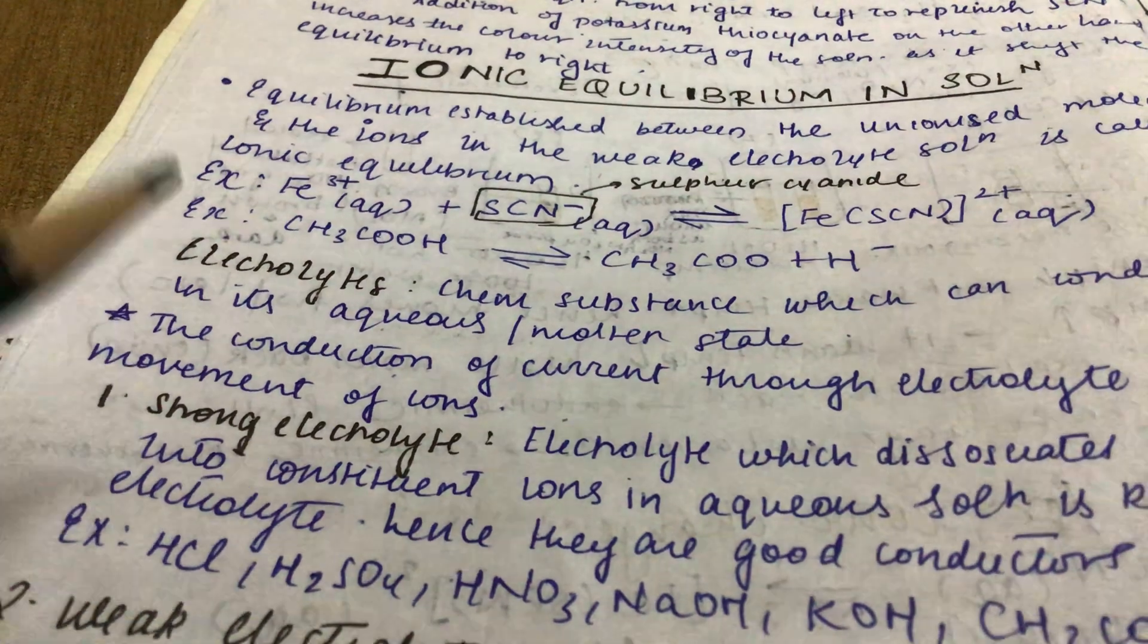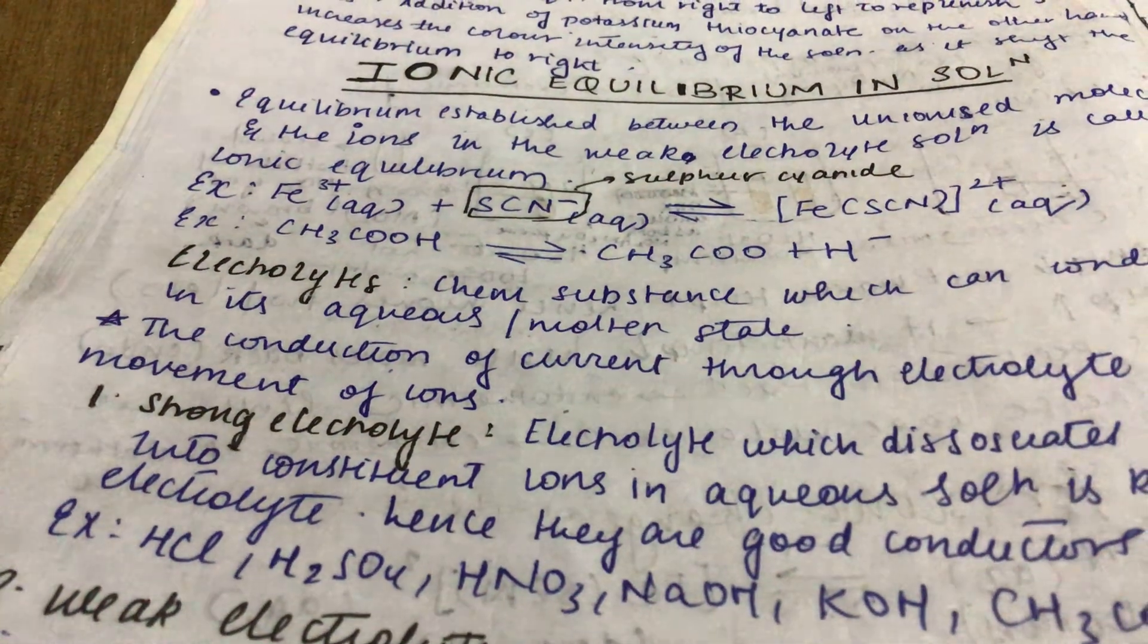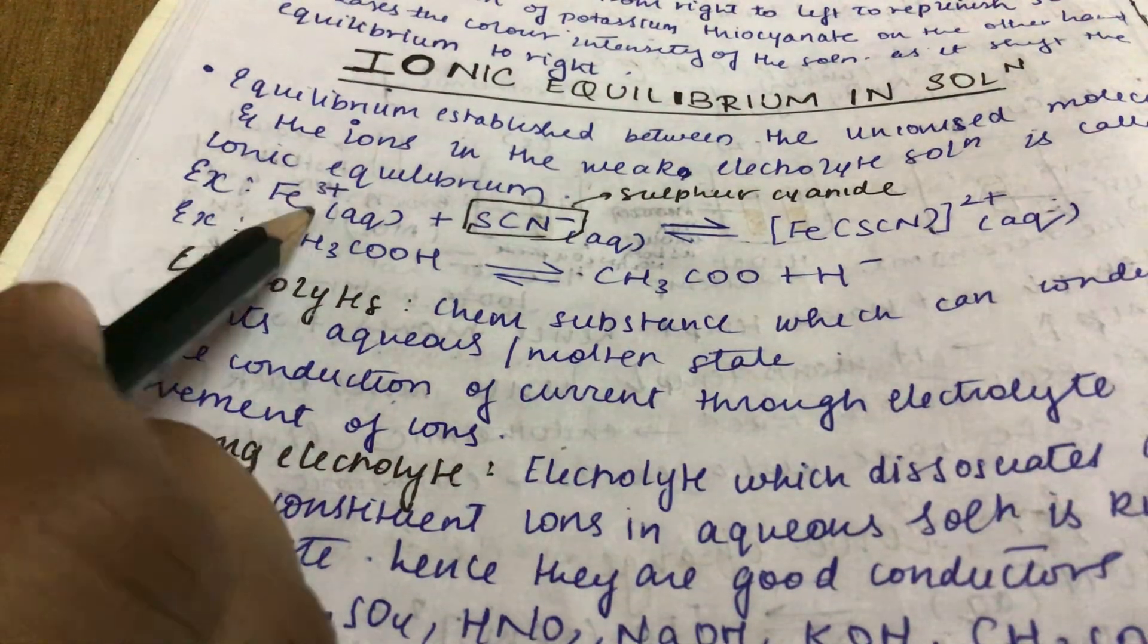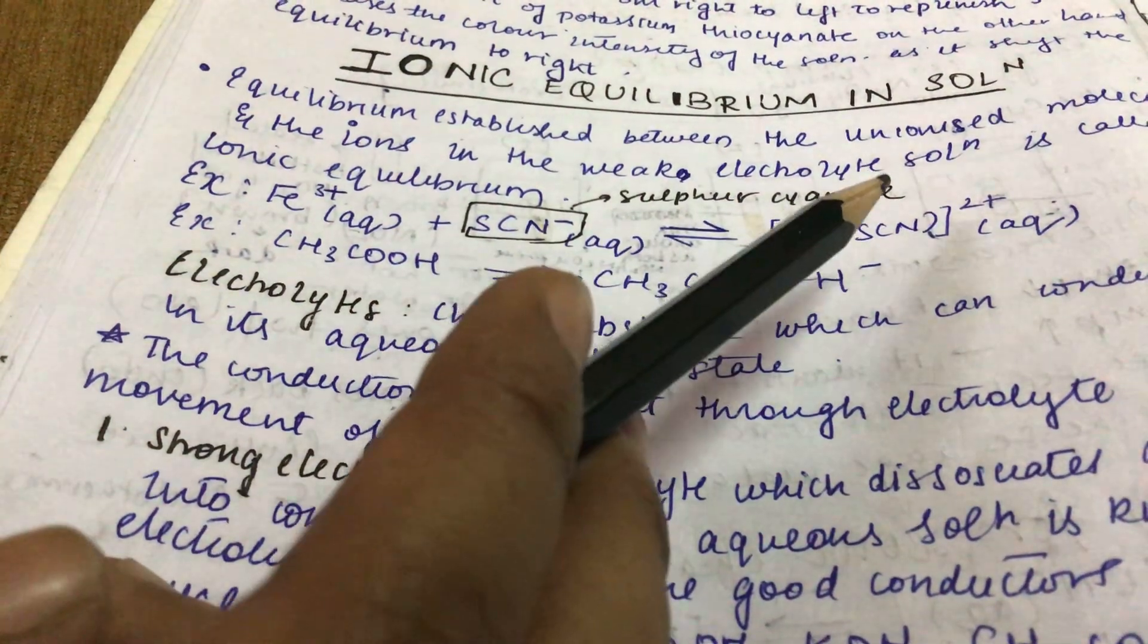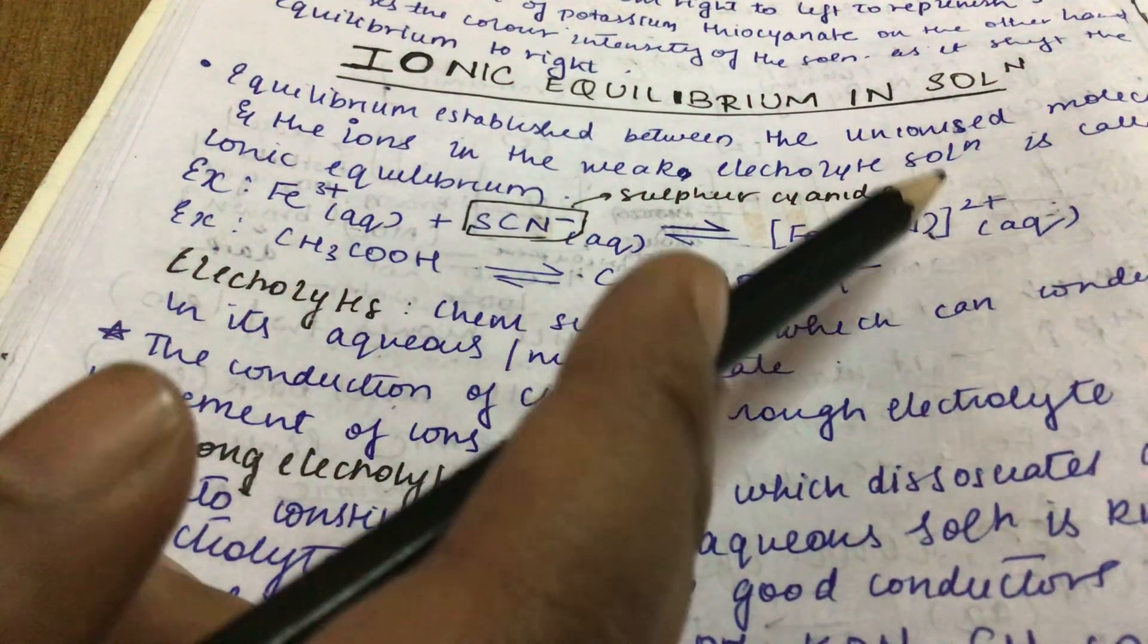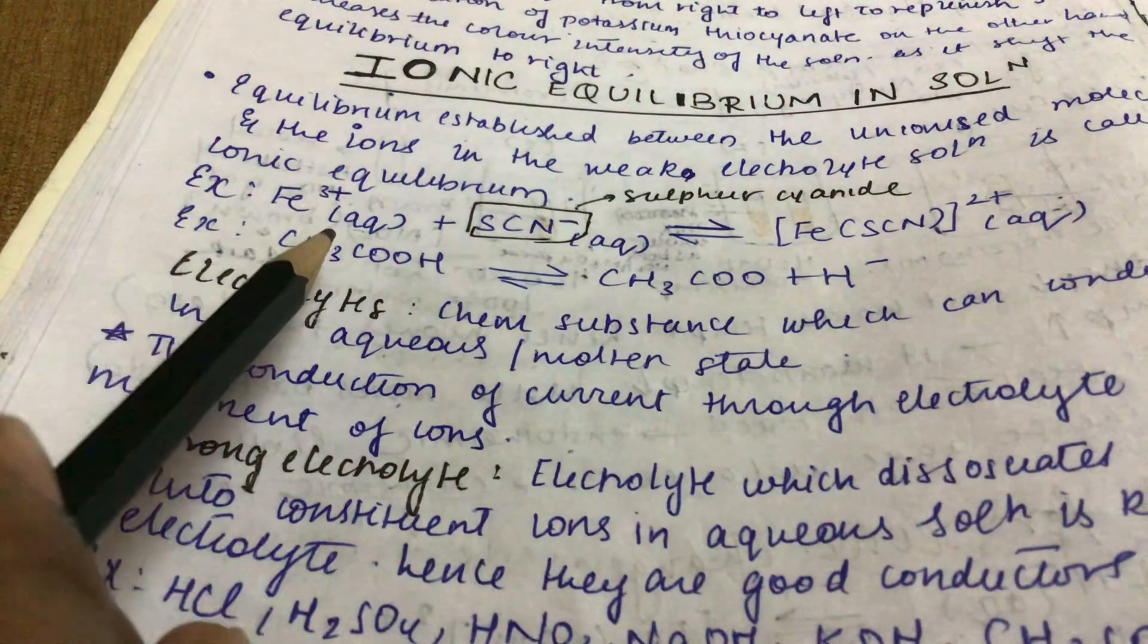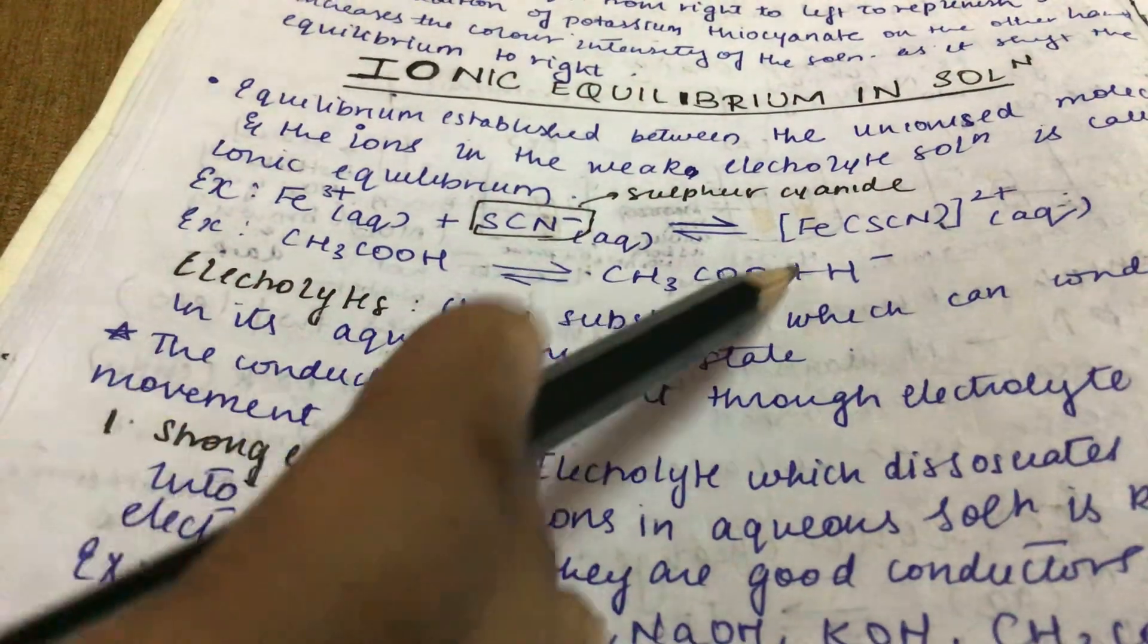The unionized ions are also in equilibrium. Example: Fe3+ aqueous plus SCN minus (sulfur cyanide) gives FeSCN2+ ferrous cyanide. Example: CH3COOH gives CH3COO minus plus H plus.